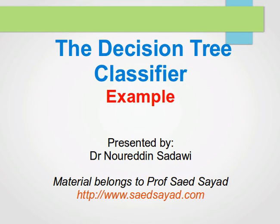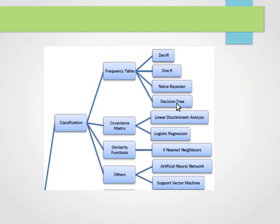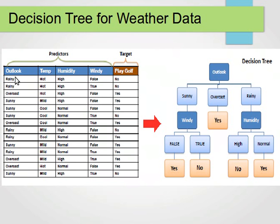Welcome back! In the last video we learned how the decision tree classifier works. In this video we're going to have an example so things become much clearer. Remember that the decision tree classifier is a frequency table based classifier, and the way it works is using one predictor at a time we try to build a tree and split according to a certain criteria — we want the variable or the attribute that gives us the highest information gain.